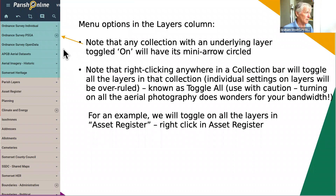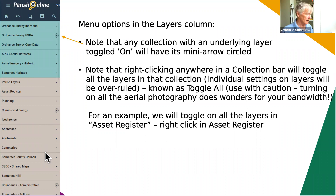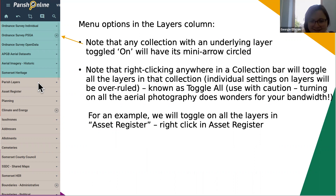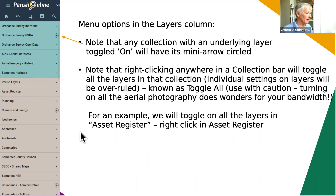Any collection with a circle around it means it has a layer toggled on, and you can open it to find out which layer by clicking on the arrows. However, if you right-click anywhere in the collection bar, that will turn on everything in that collection. It's probably a mistake to do it in parish layers as you'll bring up everything, and on aerial photography you'd be waiting hours for it all to download.